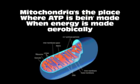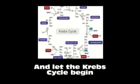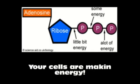Mitochondria is the place where ATP is being made, when energy is made aerobically. So breathe in some oxygen and let the Krebs cycle begin. Send NADH to ETC — your cells are making energy.